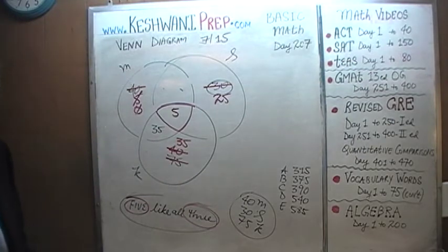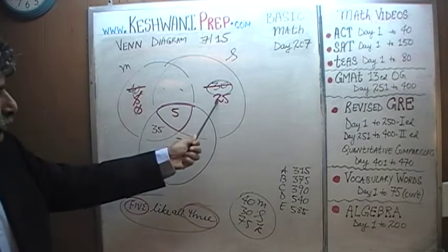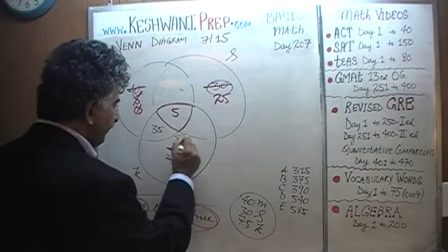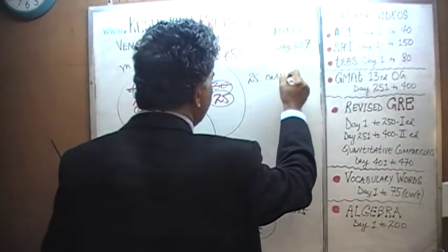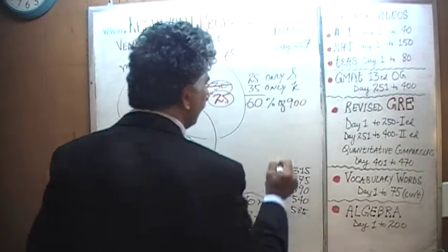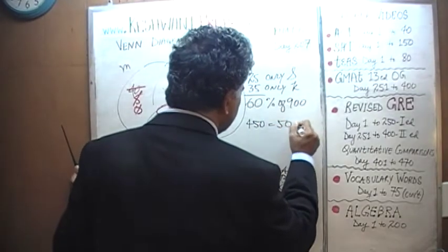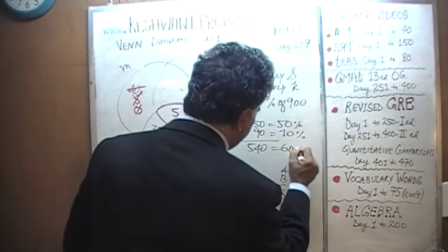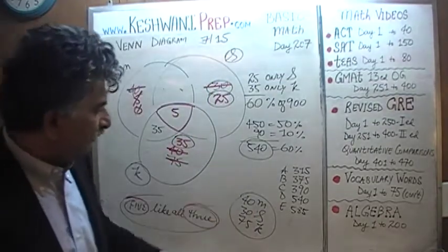There is your answer. The question was how many are engaged in exactly one activity: 0 people like only music, 25 like only sports, and 35 like only kiting. That gives us 60 out of 100 — which is 60% of 900. 50% of 900 is 450, and 10% of 900 is 90, so 60% is 540. There are 540 people who indicated only one activity. The answer is D.